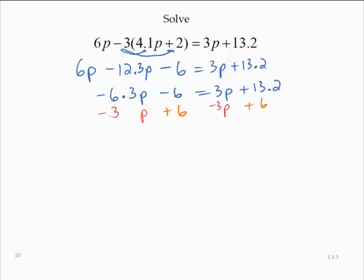Negative 6.3p minus 3p, that's negative 9.3p. Right-hand side, I've got 13.2 plus 6, so that's a 19.2.